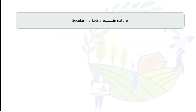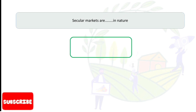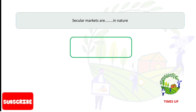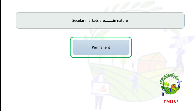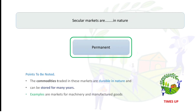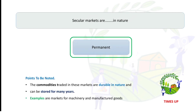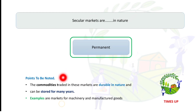Secular markets are permanent in nature. The commodities traded in these markets are durable in nature and can be stored for many years. Examples of secular markets include machinery and manufactured goods.